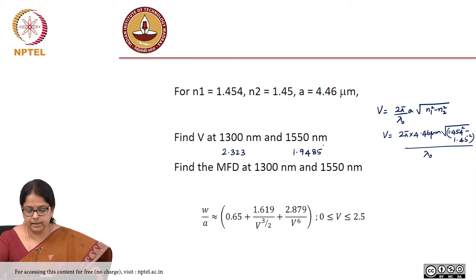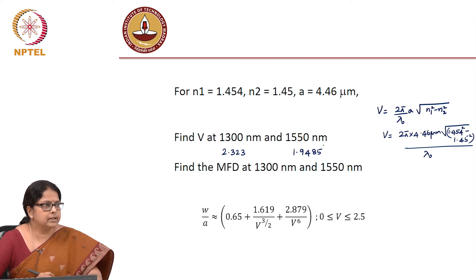So are they single-moded or multimoded? Both are less than 2.4, so it is a single mode for both 1300 and 1550 nanometer. And as I said last time, this N1 and N2 are the typical differences that you will see in a commercial standard step index fiber.